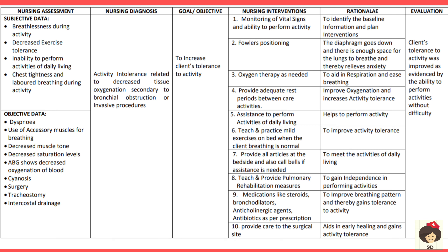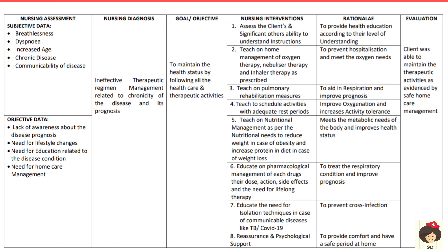When the client is breathing normally, teach and practice mild exercises in bed to prevent spasticity of extremities and improve activity tolerance. Teach pulmonary rehabilitation measures covering exercise, nutrition, lifestyle, and medications. Administer medications such as steroids, bronchodilators, anticholinergics, and antibiotics to improve breathing and oxygenation of tissues, thereby increasing activity tolerance. Provide care to the surgical site so wounds heal faster and the patient can eventually perform activities independently. Evaluate whether activity tolerance is improved.